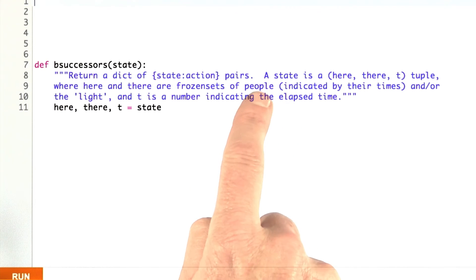The frozen sets contain people, 1, 2, 5, and 10, and or this light indicated by the string light. Show me the function that will generate all the successors. Here I've given you a hint of here's a way to break up the state into those three variables, and then put your code here.